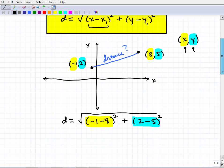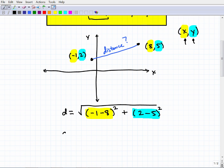Now we're going to actually do the number crunching part of this. The distance is going to be equal to the square root of negative 1 minus 8 is what? That's going to be negative 9 squared plus what's 2 minus 5? 2 minus 5 is what? I'm asking you the question before I write it. Hopefully you said negative 3 squared.